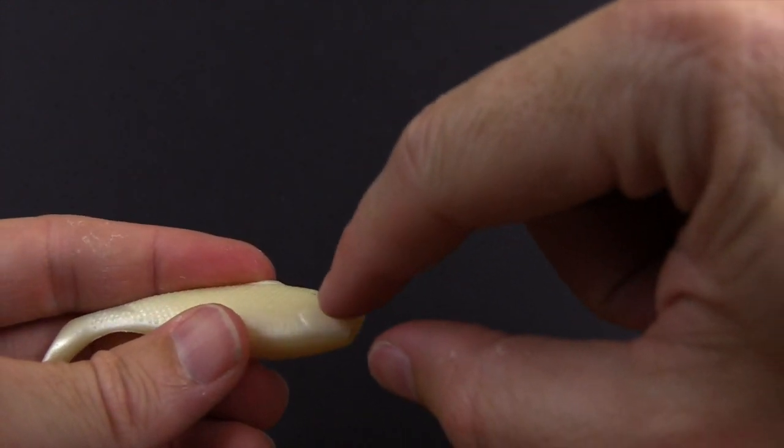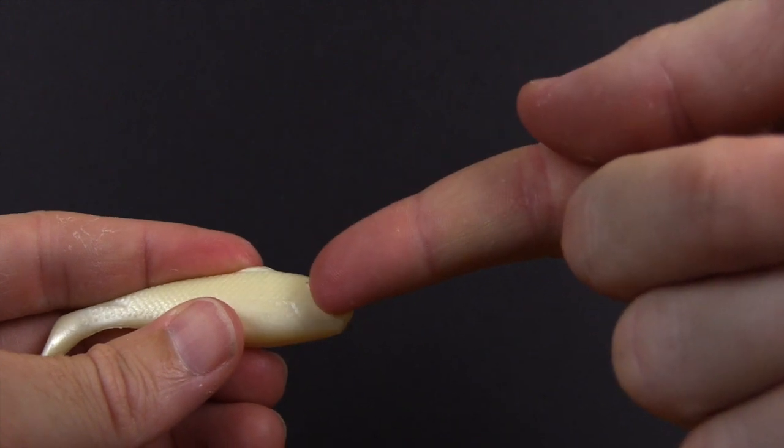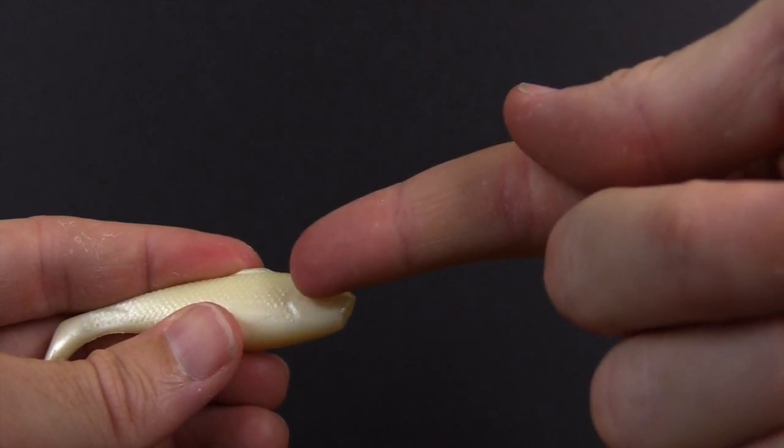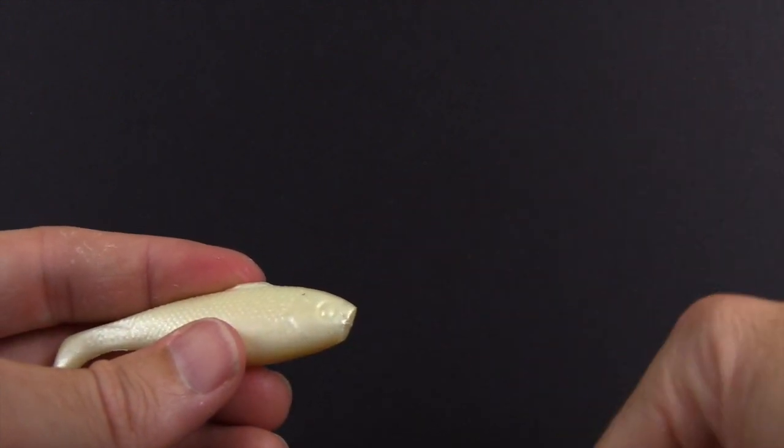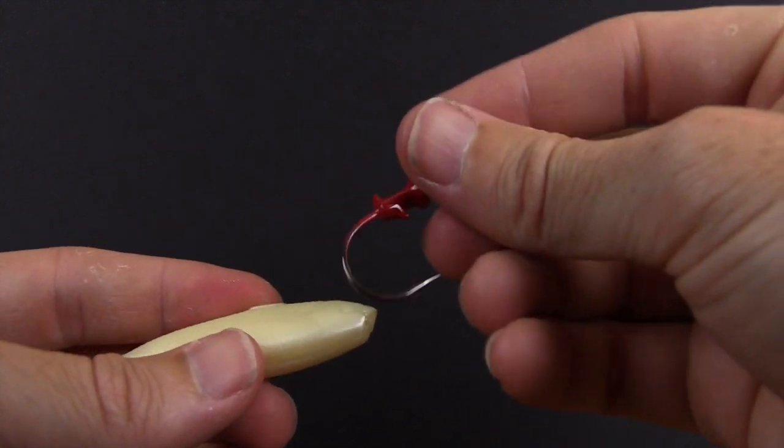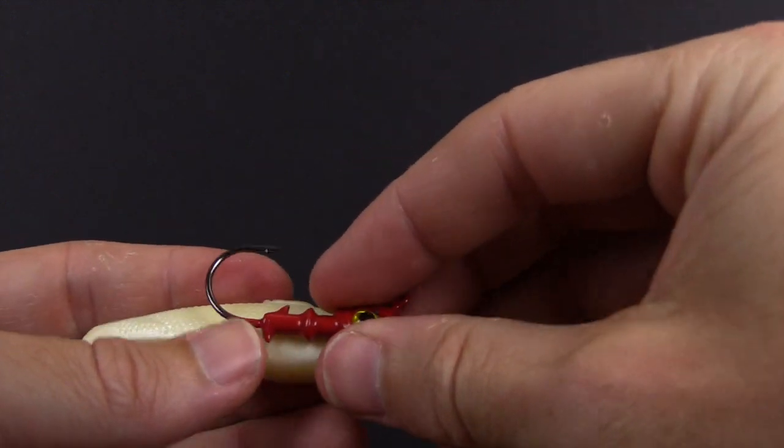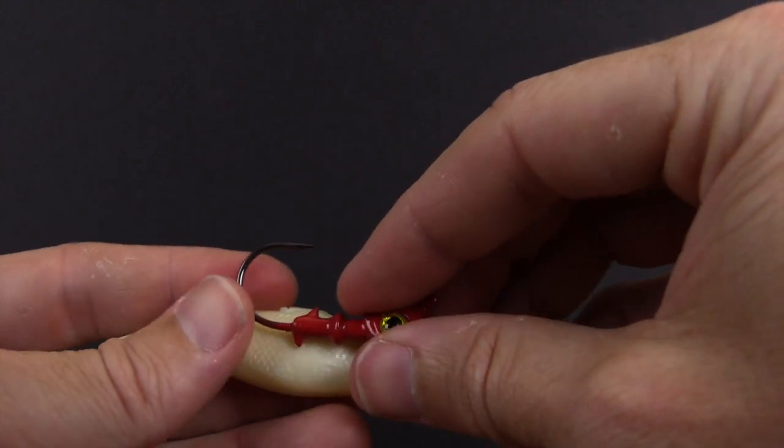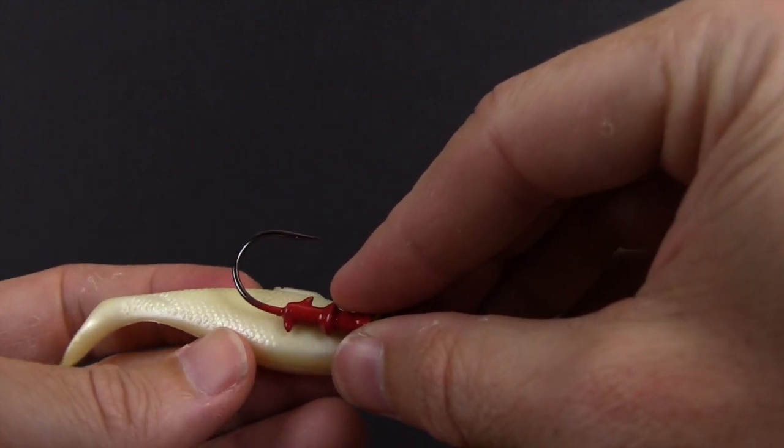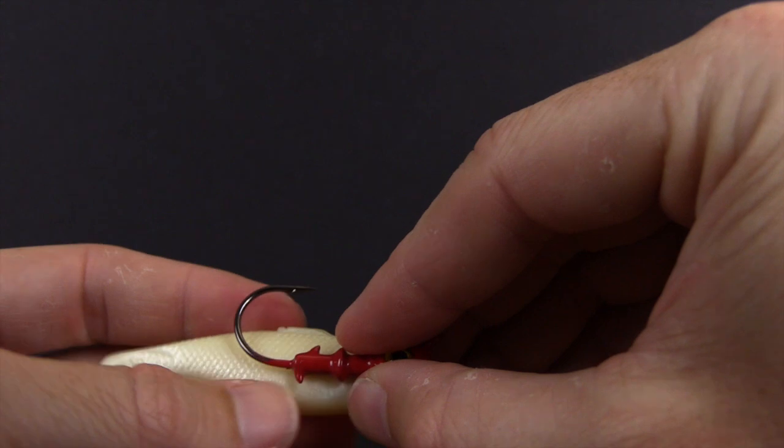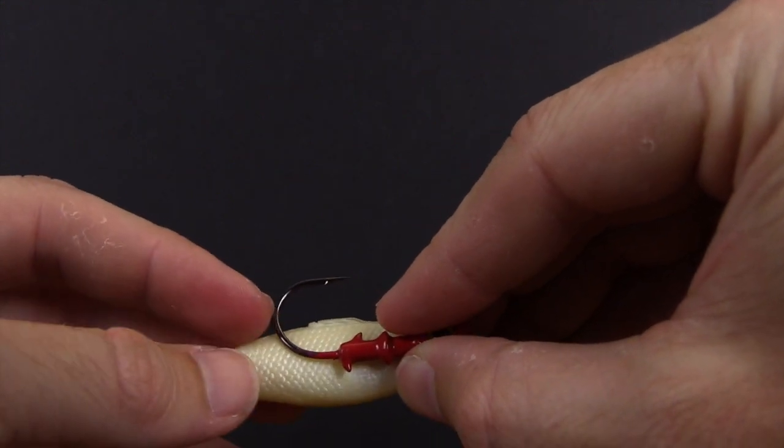Because what that's going to do is that's going to give this little hook keeper section on the actual jig head some nice, fresh material for the hook keeper as well as the top of this hook.